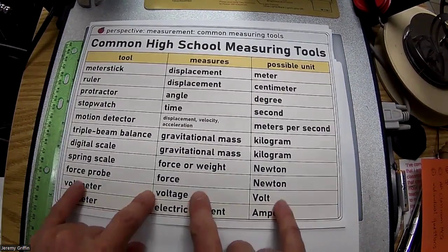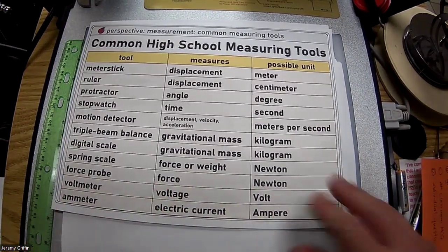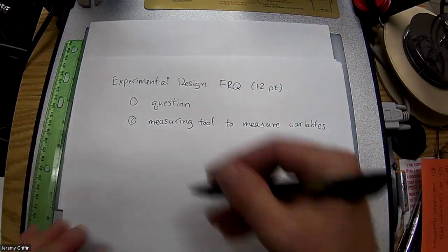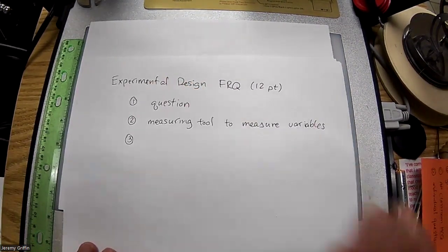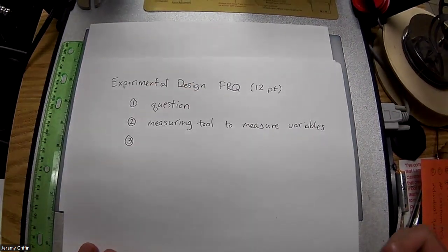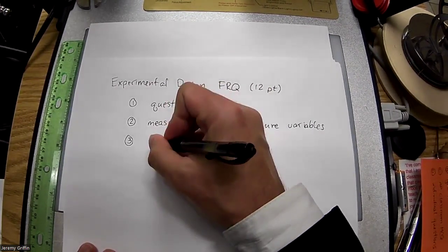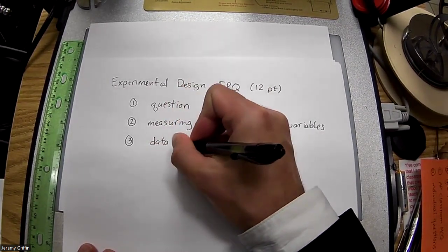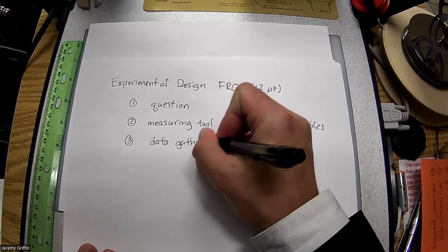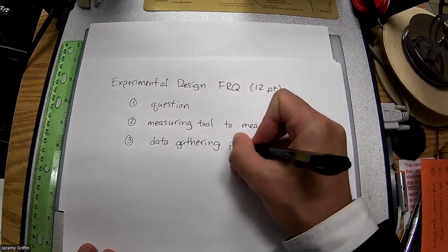Voltmeter and ammeter. Then what's the next part they're going to go into? Yep, procedure. I'm going to specify a little bit more. I'm going to say data gathering procedure.